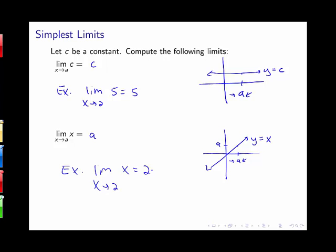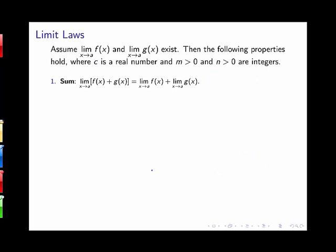Now let's look at our general limit laws. These laws assume that we have two limits that exist: the limit as x goes to a of f(x) and the limit as x goes to a of g(x). Then we have the following properties, where c is a real number and m and n are integers. The first rule says the limit of a sum of two functions equals the sum of the two limits. We also have a rule that the limit of the difference of two functions equals the difference of those two limits.